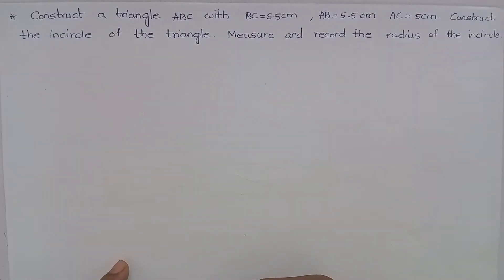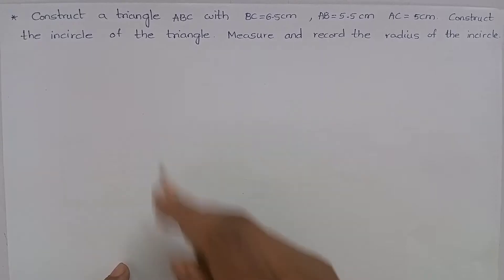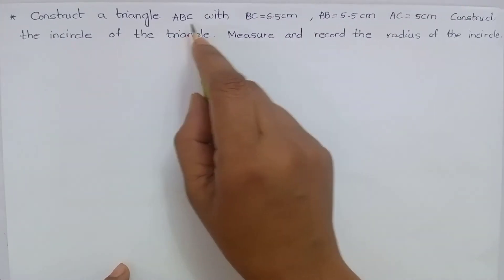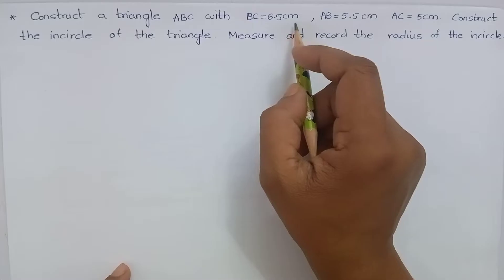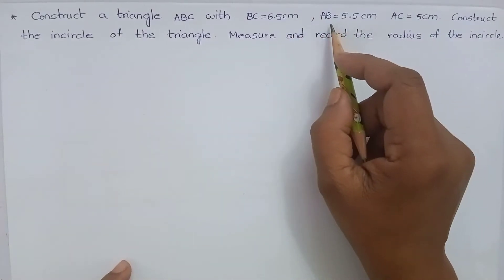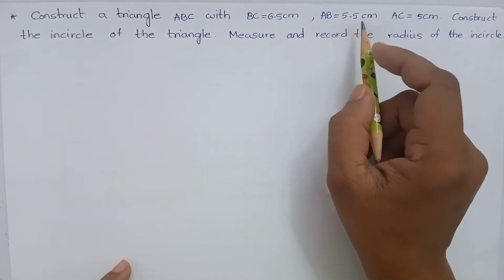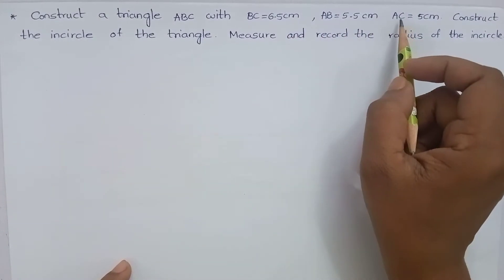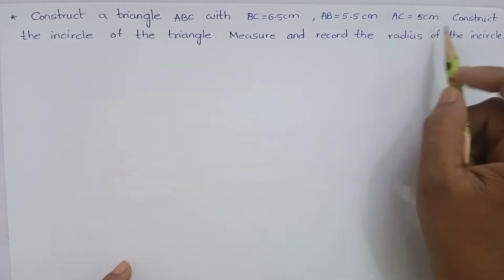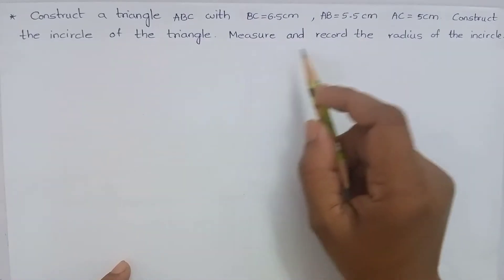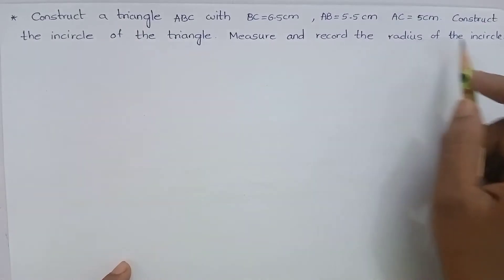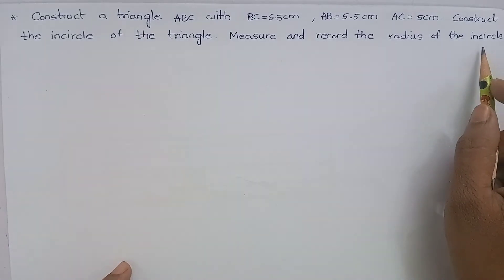Namaste. Welcome to Blishon concept teaching. Let's do the construction. Construct a triangle ABC with BC equal to 6.5 cm, AB equal to 5.5 cm, and AC equal to 5 cm. Construct the incircle of the triangle. Measure and record the radius of the incircle.